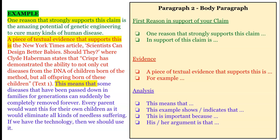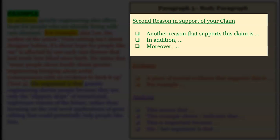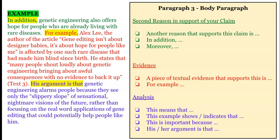For the second reason to support your claim, we look at paragraph three. You want to start a new paragraph, and then you can use the same structure as you used for paragraph two. So you start by stating your second reason in support of your claim. You may want to start it by saying something like 'another reason that supports this claim,' 'in addition,' or 'moreover.' And then you give your evidence — remember to cite the text correctly — and then lastly, you give your analysis.